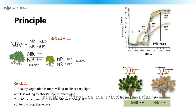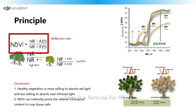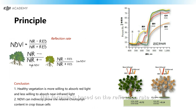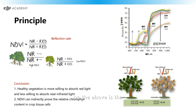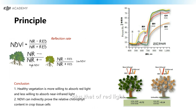Let's firstly introduce the principle of Variable Rate Application. Here we set NDVI as an example because NDVI is the most commonly used vegetation index. Here is a formula for NDVI. This formula is based on the reflection rate of near-infrared light and red light — near-infrared minus red on top, and near-infrared plus red on the bottom.